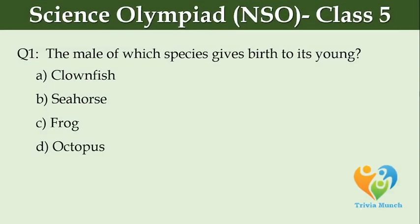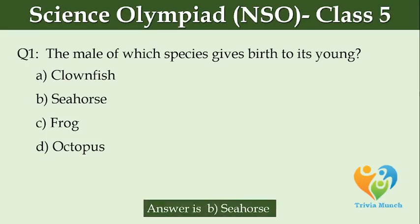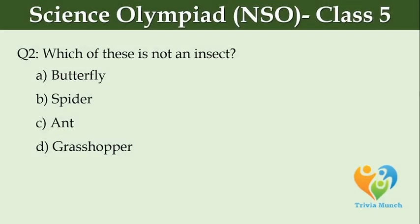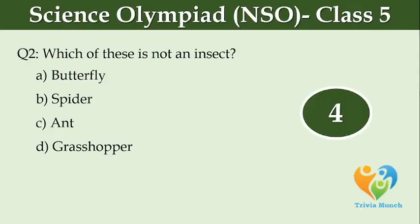The male of which species gives birth to its young ones? Option A, clownfish. Option B, seahorse. Option C, frog. Option D, octopus. Which of these is not an insect? Option A, butterfly. Option B, spider. Option C, ant. Option D, grasshopper.